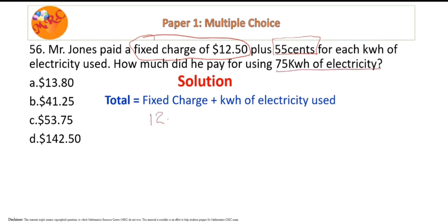We know that the fixed charge is already $12.50, but we need to figure out what's the cost for this 75 kilowatt that he has used. So we know that it's going to be 55 cents, which is 0.55 times 75. All right, it's multiple choice so you don't have a calculator, so we're going to go with this long multiplication. So it's 0.55 times 75.